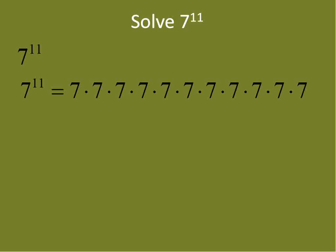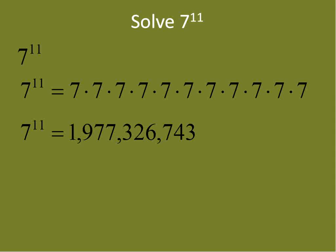Now a ridiculously large one: 7 to the power of 11. That means 7 times itself 11 times. The biggest challenge is keeping track of how many 7s there are — count them: 1, 2, 3, 4, 5, 6, 7, 8, 9, 10, 11. Multiply each one carefully: 7 times 7 is 49, and continuing gives us a huge number — almost 2 billion.